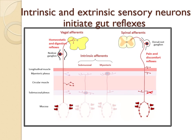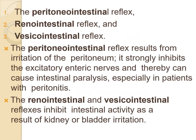Intrinsic and extrinsic sensory neurons initiate gut reflexes — intrinsic neurons and extrinsic inputs from vagal afferents, parasympathetic, and sympathetic. There are also other intestinal reflexes: the peritoneo-intestinal, reno-intestinal, and vesico-intestinal reflexes. The peritoneo-intestinal reflex results from irritation of the peritoneum; it strongly inhibits excitatory enteric nerves and can cause intestinal paralysis, especially in patients with peritonitis.